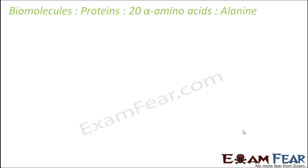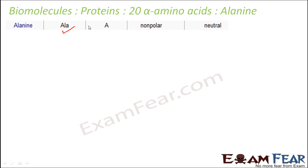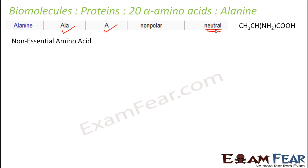Let us talk about the first alpha amino acid, that is alanine. For alanine, the three-letter short form is ALA and the one-letter form is A. It is a non-polar neutral amino acid — it has the same number of amino groups as carboxylic groups. It is a non-essential amino acid, meaning it is synthesized within the body of a living organism. It is generally found in muscles of living beings and is linked to diseases like diabetes and high blood pressure.